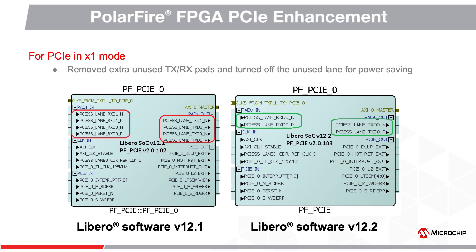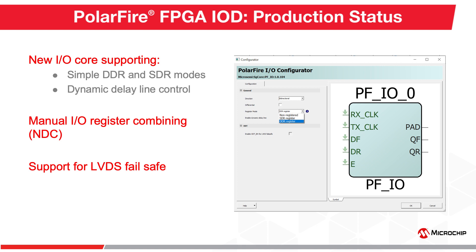The PolarFire PCIe configurator in 1x mode has been enhanced by removing additional unused TX and RX ports, and transceiver power will be reduced. Version 12.2 also supports production status for IOD CDR. The PolarFire IOD CDR is enhanced to support simple DDR and SDR modes. Dynamic delay line control for this core has been added. Manual I/O register combining is introduced with this release.